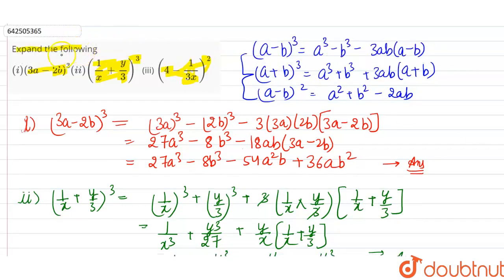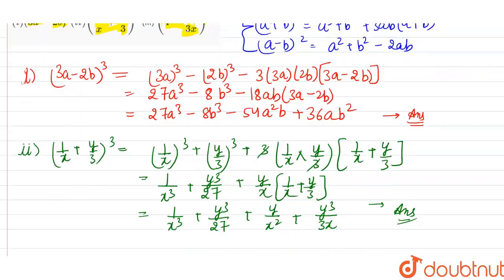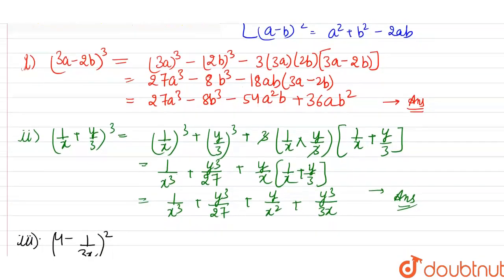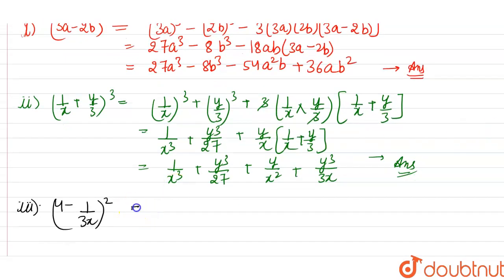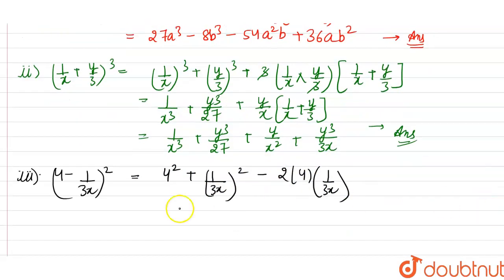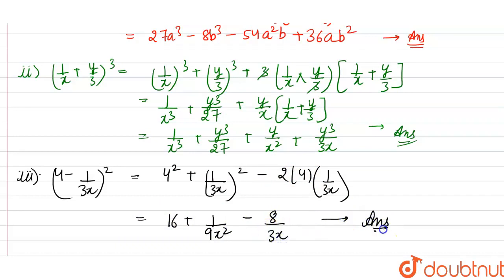The third part is (4 - 1/3x)². We use the third identity (a - b)² = a² + b² - 2ab, giving 4² + (1/3x)² - 2 × 4 × (1/3x), which equals 16 + 1/9x² - 8/3x. This is the answer to the third part.